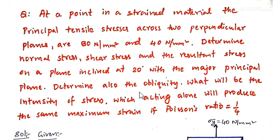Also determine the obliquity. Find the intensity of stress which, acting alone, will produce the same maximum strain if Poisson's ratio is 1/4.